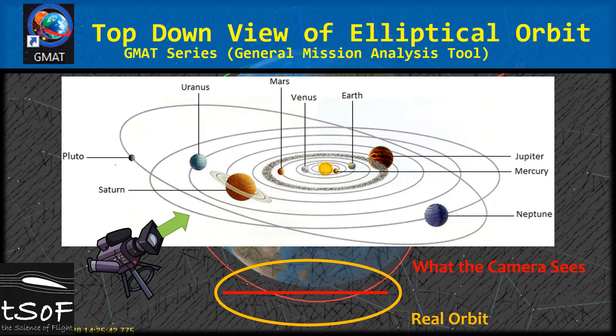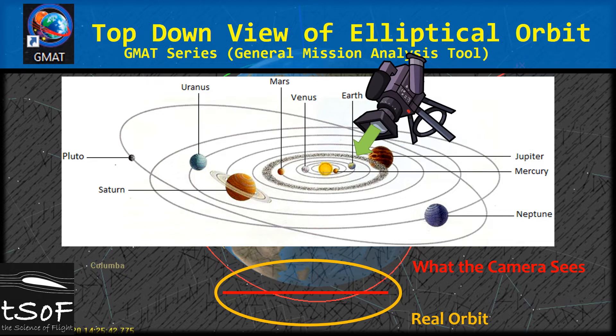We really need to find a camera view that's a top-down view looking at a flat orbital plane so that we can see the true shape. And that's what this video is about — I'm going to show you a quick trick on how to move the camera to a top-down view of the orbit so you can see its true shape. Let's get to it!